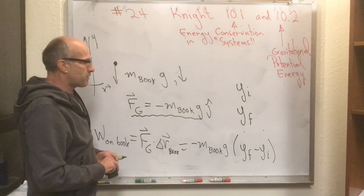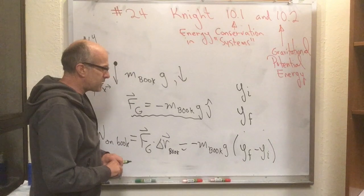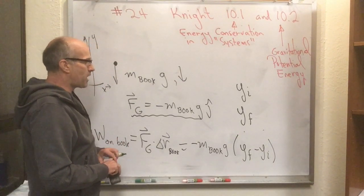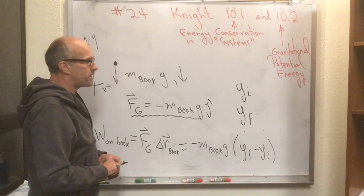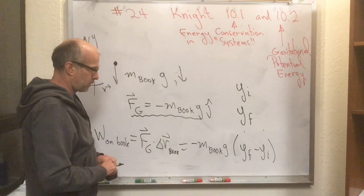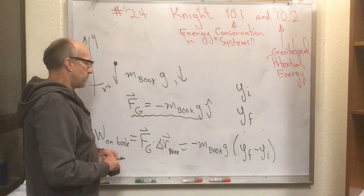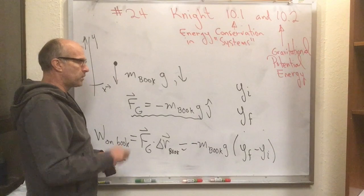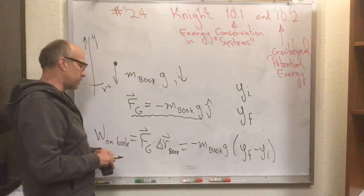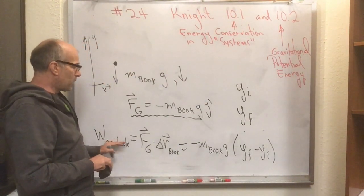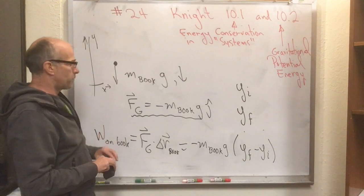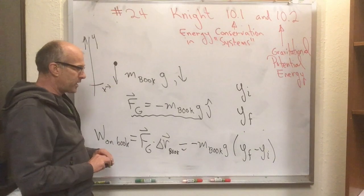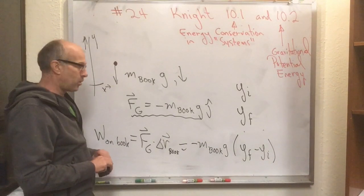So just like in the case of the spring, it would be nice if this change in kinetic energy of the book could be attributed to being stored somewhere. In the case of the spring, we attribute it to being stored in the spring, and then the spring launched that smaller mass away and gave it some kinetic energy. Here, there's no spring that's visible between the earth and this book, but there is something that we're going to start imagining exists that we call the gravitational field.